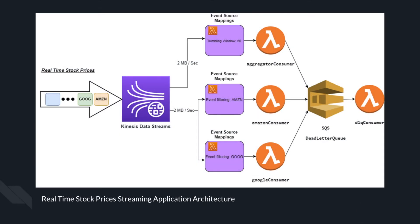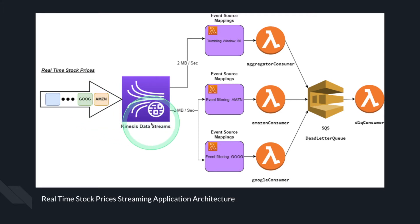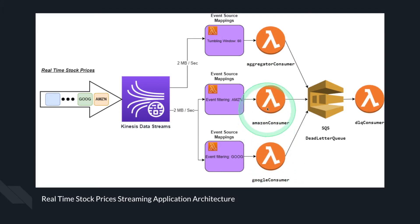This is the architecture of the application. Stock prices for Amazon and Google are published into a Kinesis data stream every 100 milliseconds. The Kinesis stream has three consumers.